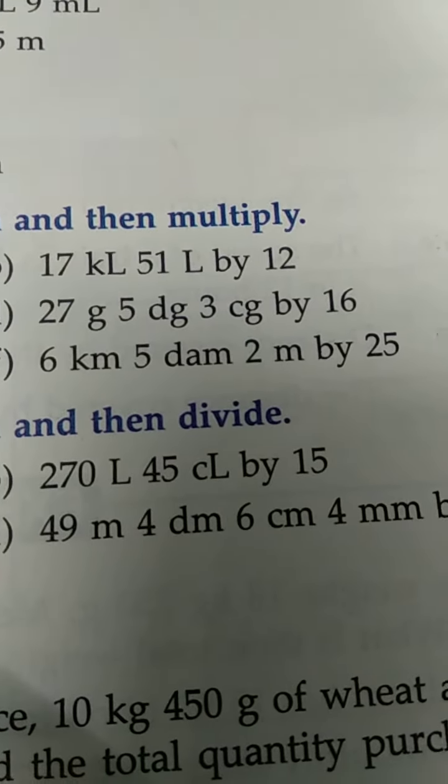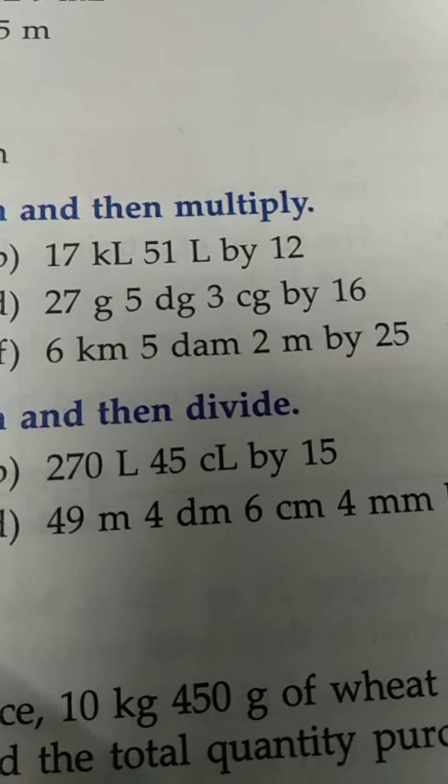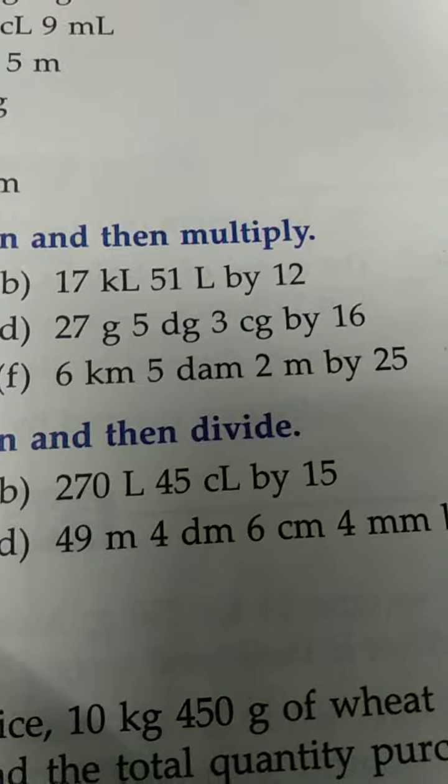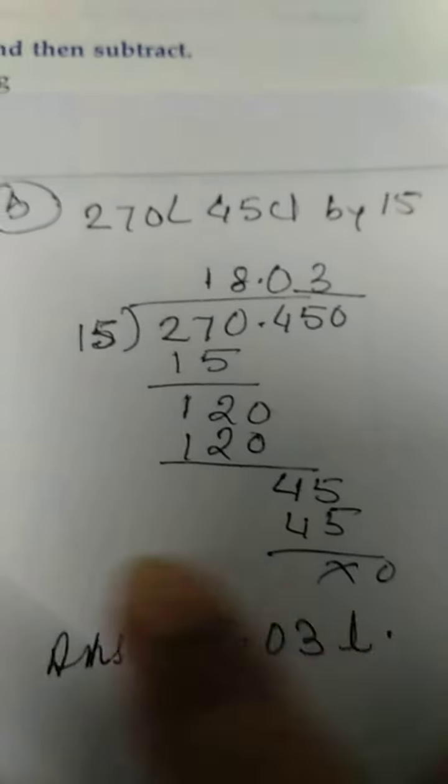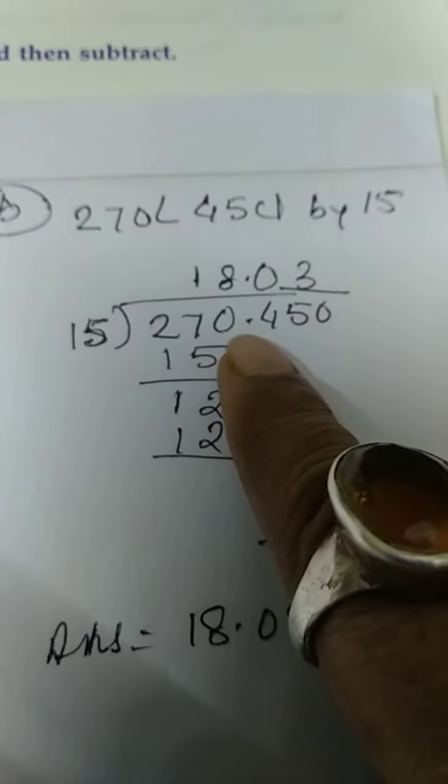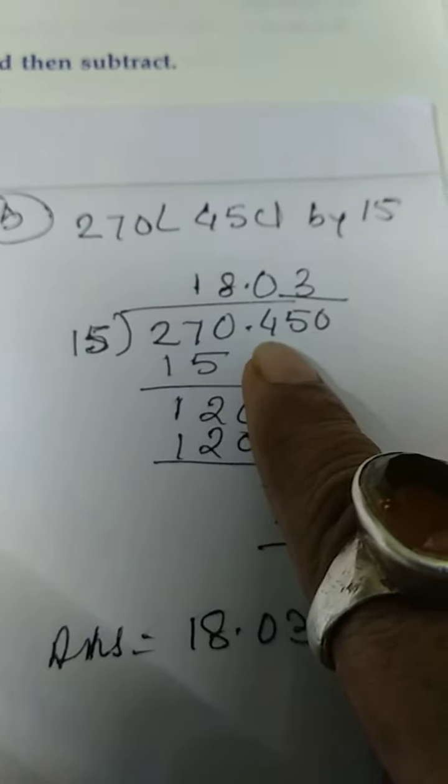I will give you the sums, you check it out, and if you have any problem, you can ask me. Here, see, 270, 4, 5. So 4 came in that place, DL, then Cl.